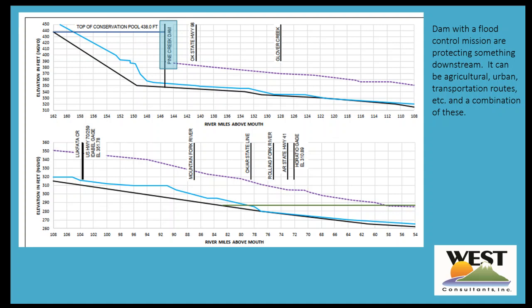Dams that have a flood control mission are protecting something downstream, and a variety of things can be protected. One is protection for downstream transportation routes — if you have a big flood occurring downstream you can capture inflow from the controlled areas and keep transportation routes open longer. You may also be protecting rural or agricultural areas along with urban areas. The focus of your protection can change as the event gets worse. Typically you'll be looking at a downstream point — in this case the Horatio gauge — to help make the determination on what you'll be releasing from the dam.